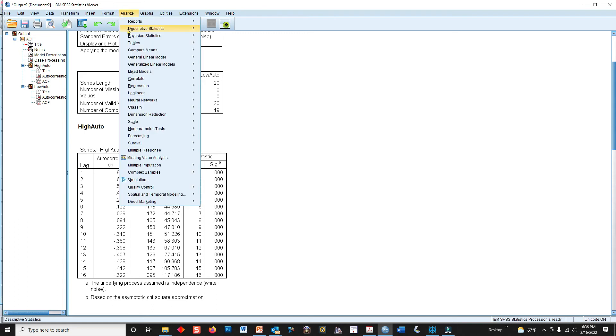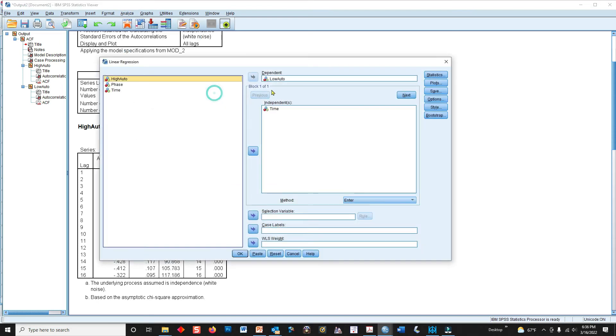To get the autocorrelation Durbin-Watson statistic, we need to set up a regression equation. And let me reset it. Start from scratch. For the high auto variable, I put that in dependent. And I'm going to put time as my independent variable.